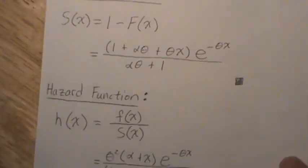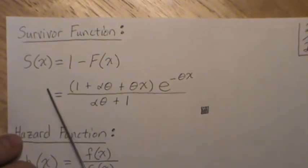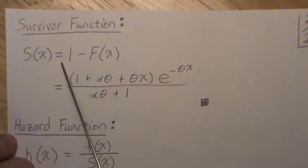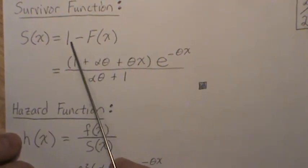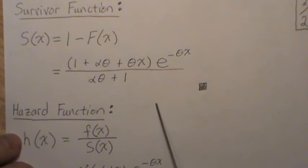So now let's look at the hazard function, and for that we need the survivor function, which is 1 minus the CDF. So we plug in what we just derived, and the 1's cancel from it, and we're left with this.